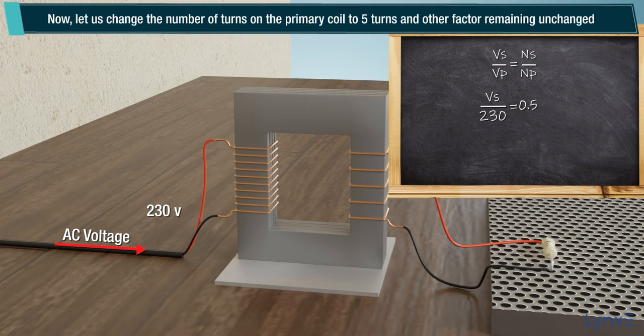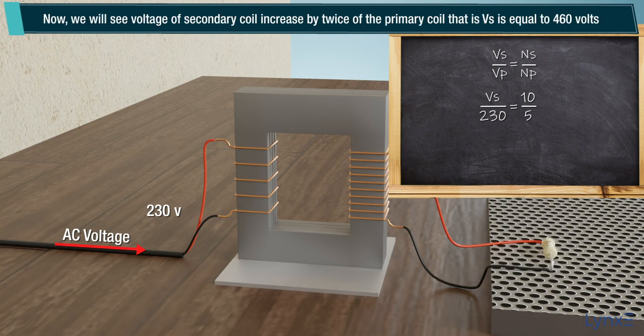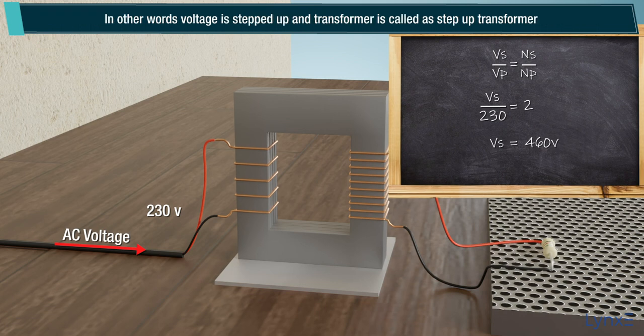Now, let us change the number of turns on the primary coil to 5 turns, and other facts remaining unchanged. Now, we will see voltage of secondary coil increase by twice the primary coil, that is Vs equals 460 volts. In other words, voltage is stepped up and transformer is called a step up transformer.